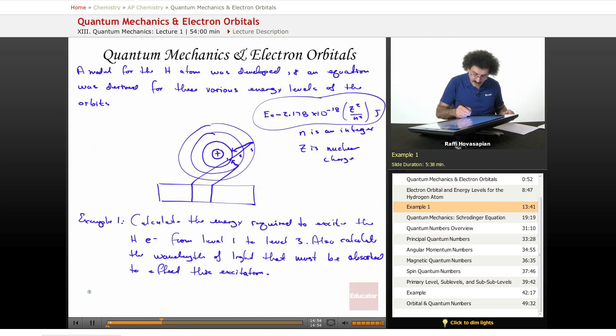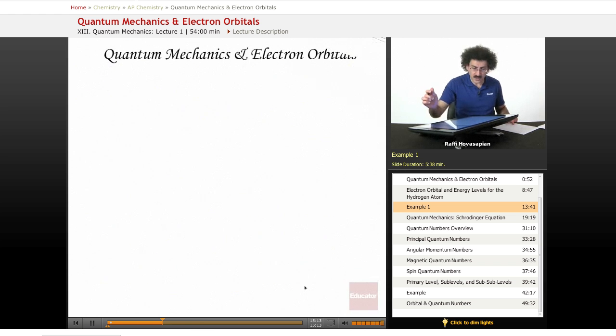Let's go ahead and start. The energy 1 is equal to minus 2.178 times 10 to the negative 18 times 1 squared over 1 squared equals minus 2.178 times 10 to the negative 18 joules.